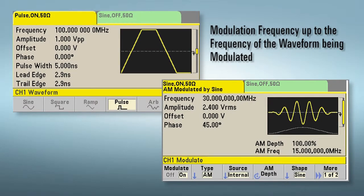Unlike most DDS-based generators, the 33600 series has an internal modulation frequency up to the full frequency of the waveform being modulated.